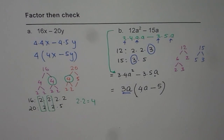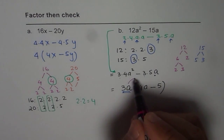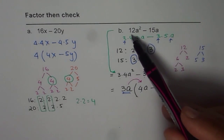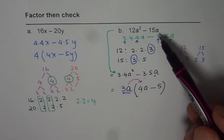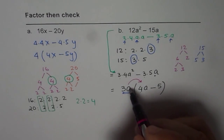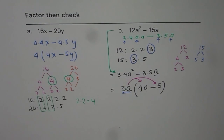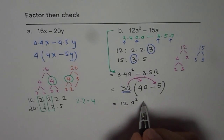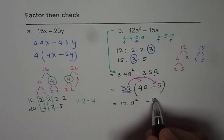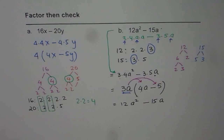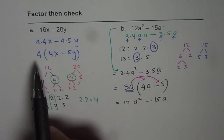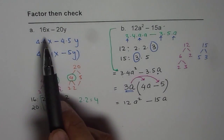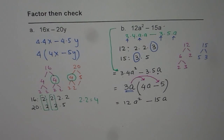Now let us see how to check it. To check means to apply the distributive property — to write the product form back as a sum or difference. So 3 times 4 is 12, and a times a is a squared. The second term: 5 times 3 is 15, and then we have a — which is the original expression. As an exercise, you should also check whether 4 times (4x minus 5y) equals 16x minus 20y. Apply the distributive property and check your answer.